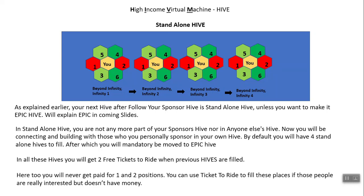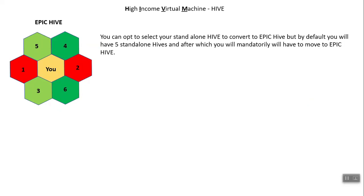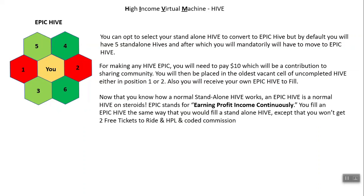Note that you won't be getting paid for number 1 and number 2 sales. You can use your ticket to ride to fill these places if those people are really interested but don't have money. Now let's go to the Epic Hive, which is the third type of hive. You can opt to select your four standalone hives or one standalone hive to be Epic. But by default, you will have a total of five standalone hives — one for your sponsor and four in the Beyond Infinity hives — after which you will be mandatorily moved to Epic Hive. For making any hive an Epic, you will need to pay an additional $10, which will be a contribution to the sharing community.